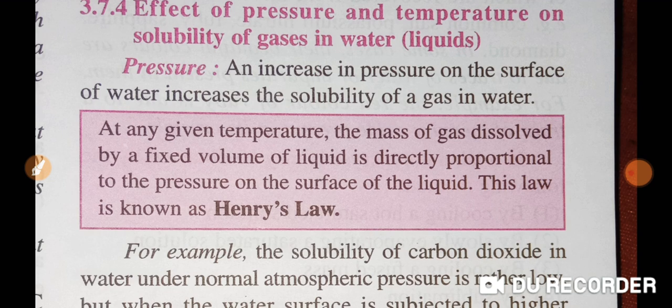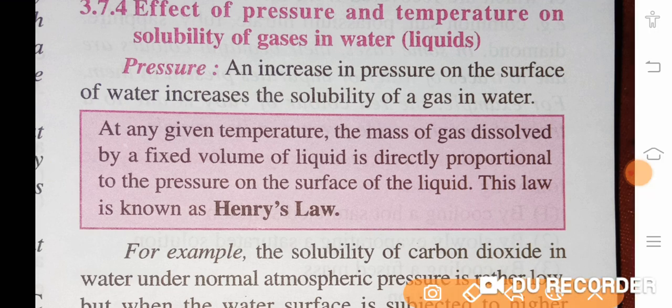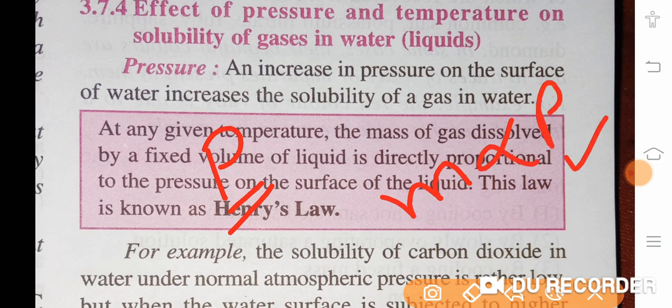To explain the solubility of gas in liquid with variation of pressure, the scientist Henry gave one law known as Henry's Law. According to Henry's Law, with increase in the pressure of the gas, the solubility of gas particles in the liquid increases. The mass of the gas dissolved in liquid is directly proportional to the pressure — greater the pressure, greater will be the solubility.